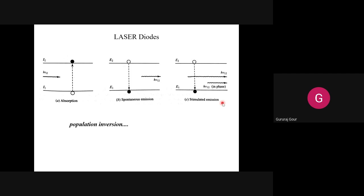In the case of LED, we make the active region small and reduce the band gap energy, or inject more carrier density into the top layer so more electrons take part in recombination. But the story of laser is different - it depends on population inversion. This is the key factor, the heart of laser operation, that differentiates it from the LED.